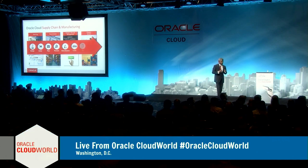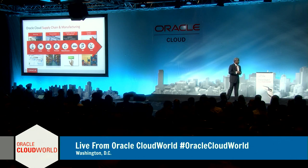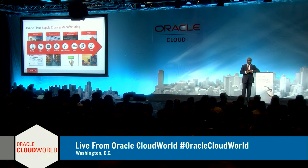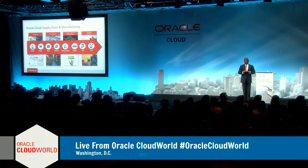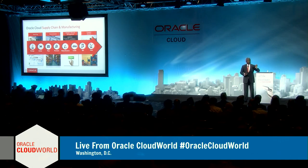Today we're announcing general availability of the Oracle Supply Chain and Manufacturing suite of cloud applications. If you're a manufacturing company, this allows you to design new products and services, put them on order management so customers can order them, and then plan both demand and supply. When you plan, you have to procure parts to manufacture — that's called direct procurement.